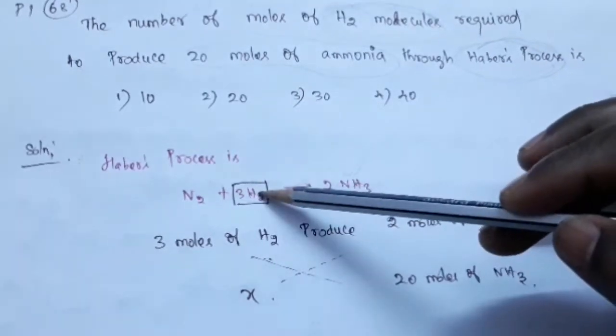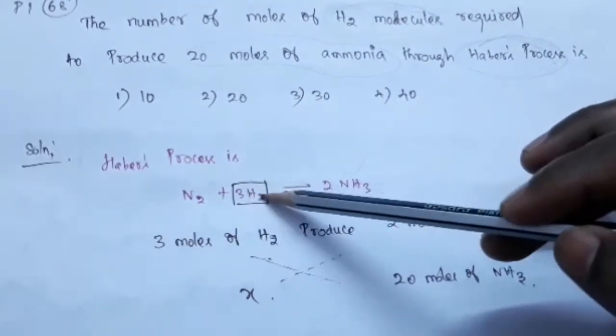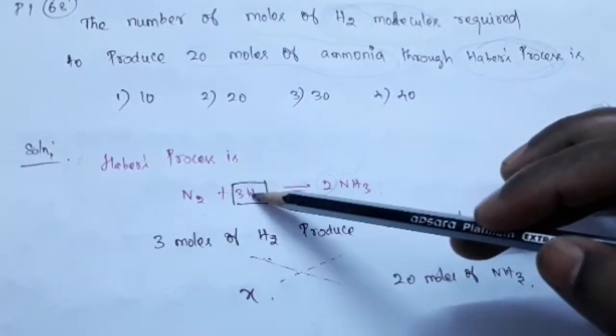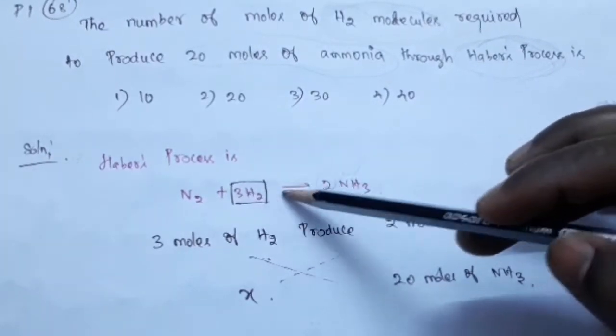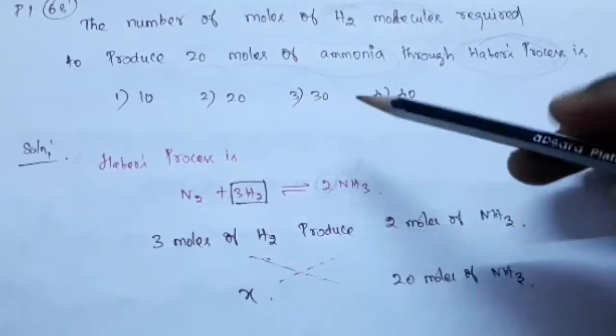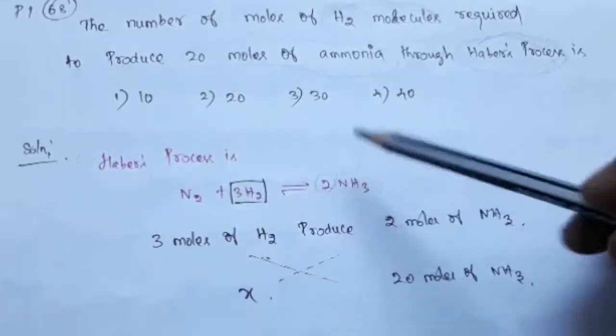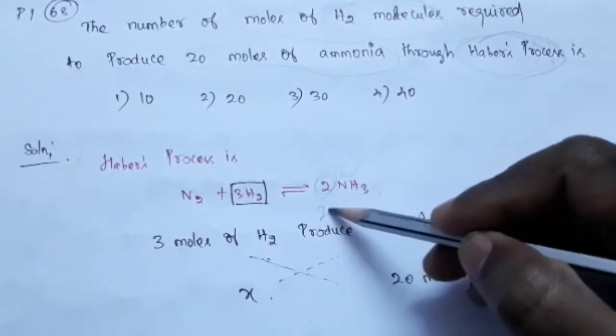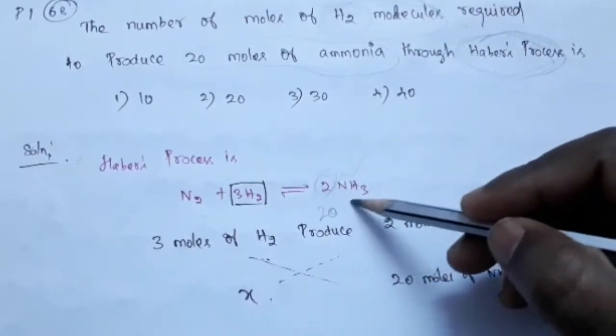See in this equation: 3 moles, 2 moles. For 3 moles of H2 it gives 2 moles of ammonia. So the question is 20 moles of ammonia. So in this place, 20 moles of ammonia.